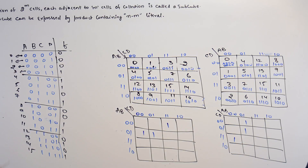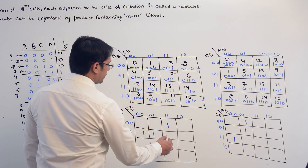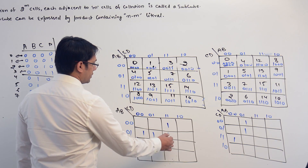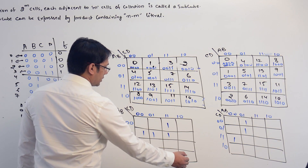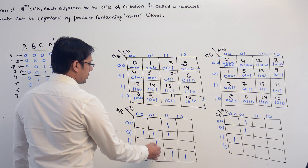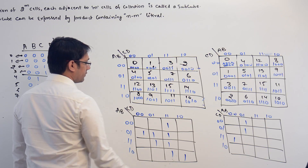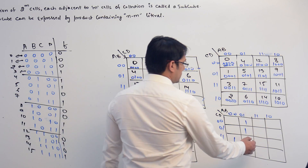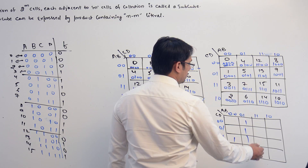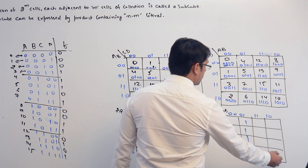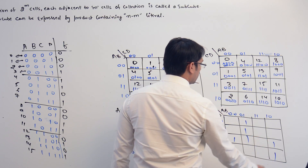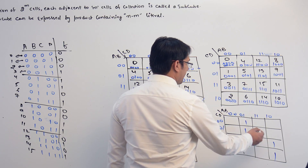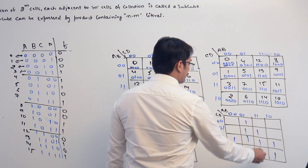Then we have 7, 10, 11, 13, and 15. Marking 7, 10, 11, 13, and 15 on the first kmap. Here also, we have 7, 10, 11, 13, and 15 on the second kmap.